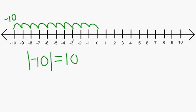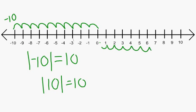This means that the absolute value of ten would equal ten, because ten is ten units to the right of zero. And also the absolute value of negative ten would equal ten because negative ten is ten units to the left of zero.